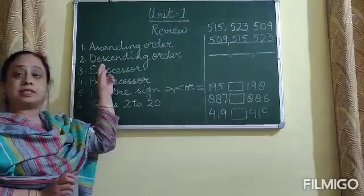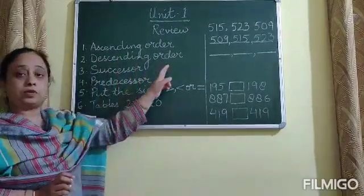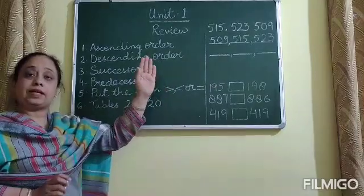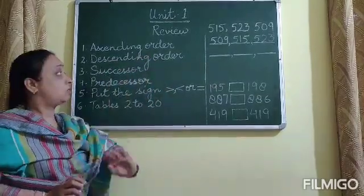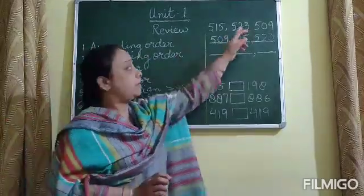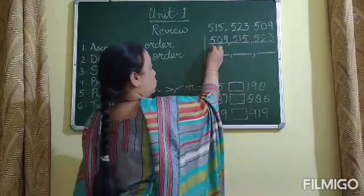Then comes descending order. Descending order is the arrangement of numbers from greatest to smallest. So, the first greatest number here is 523.